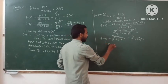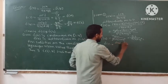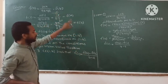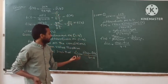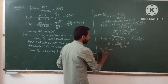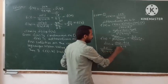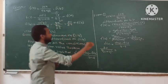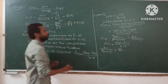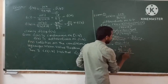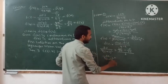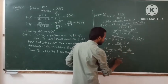Now, f'(c) = [f(4) − f(1)] / (4 − 1). Substituting x = c in f'(x): 20 / [9(c + 2)²] = [f(4) − f(1)] / (4 − 1). f(4) = 20/27 and f(1) = 10/27, so the right side = (20/27 − 10/27) / 3 = (10/27) / 3 = 10/81.